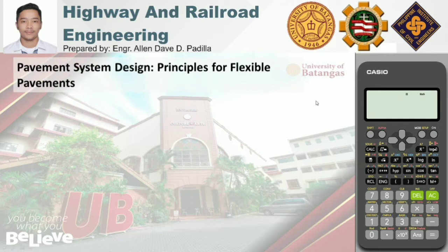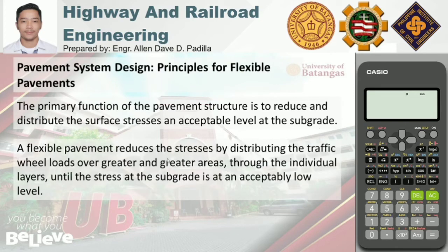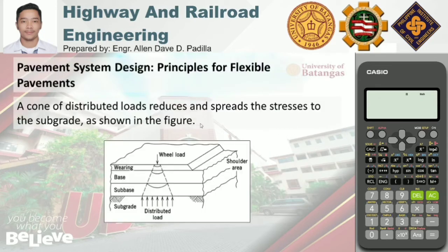The primary function of the pavement structure is to reduce and distribute the surface stresses at an acceptable level at the subgrade. A flexible pavement reduces stresses by distributing traffic wheel loads over greater and greater areas through the individual layers until the stress at the subgrade is at an acceptably low level. As shown in the figure, the distribution of load through each layer is in the shape of a cone — the area covered by the load grows larger as it reaches the subgrade, therefore reducing the stress, since stress is force over area.